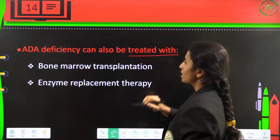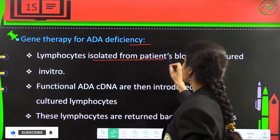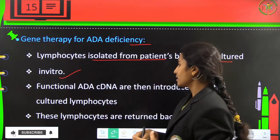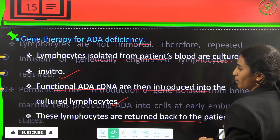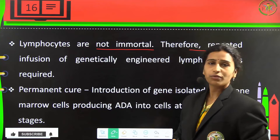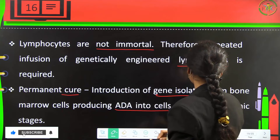ADA deficiency can also be treated by bone marrow transplantation and enzyme replacement therapy. For gene therapy of ADA deficiency, lymphocytes are isolated from the patient's blood and cultured in vitro. Functional ADA cDNA is then introduced into the cultured lymphocytes, which are returned to the patient's body. Since lymphocytes are not immortal, repeated infusion of genetically engineered lymphocytes is required. A permanent cure involves introducing the ADA gene into bone marrow cells at an earlier embryonic stage.